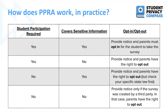When determining what PPRA requires of how you administer your survey, the two features you must carefully consider are whether student participation is required and whether the survey will cover sensitive information — not if the questions are asking about sensitive info, but if you believe students may give answers containing sensitive information. In a survey where student participation is required and does cover sensitive information, you must provide notice and parents must opt-in in order for the student to take the survey.